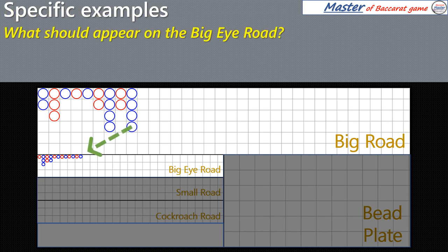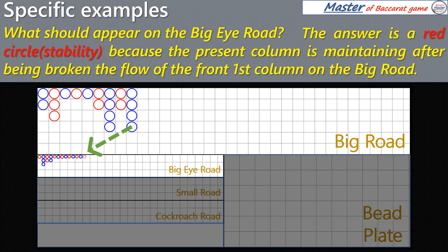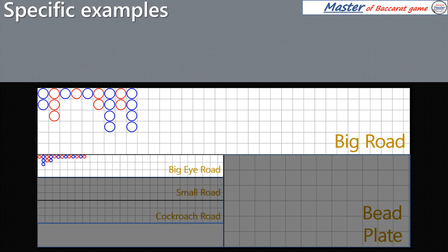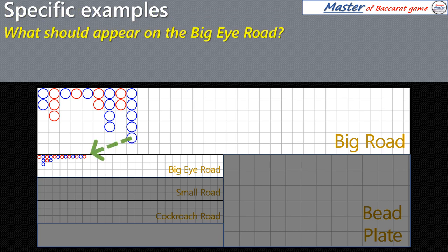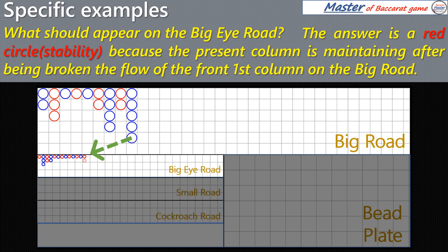What should appear on the Big Eye Road? The answer is a red circle, because the present column is maintaining after being broken the flow of the front first column on the Big Road.